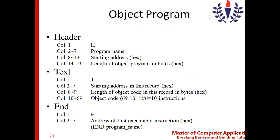This is the structure of the object program. The object program has three records: header record, text record, and end record. Each record gives you information about what is the content of that record and what it is for. For example, in the header record, the first column H denotes it's a header record, and from the second column onwards we have the program name, starting address, and the length of the program.